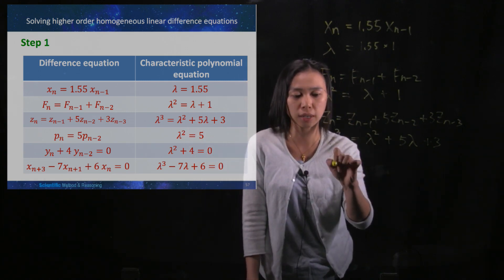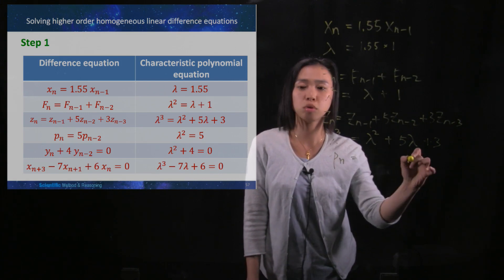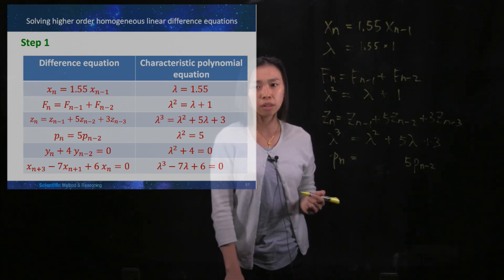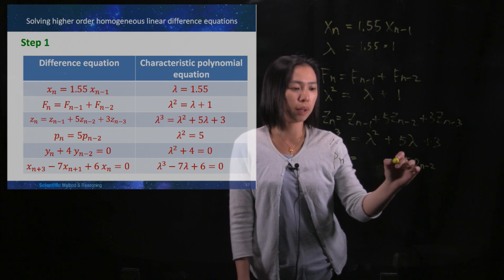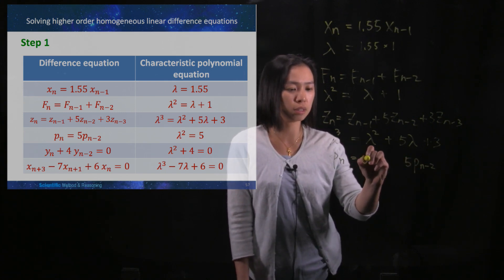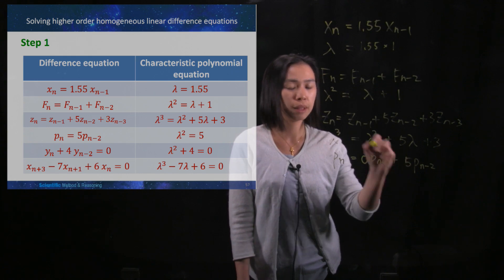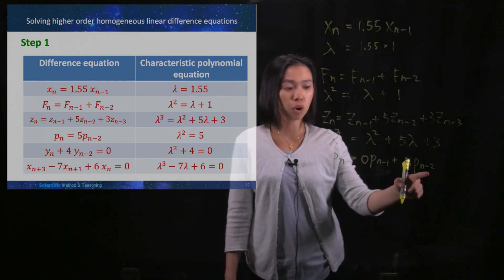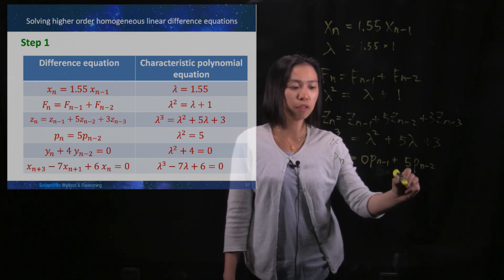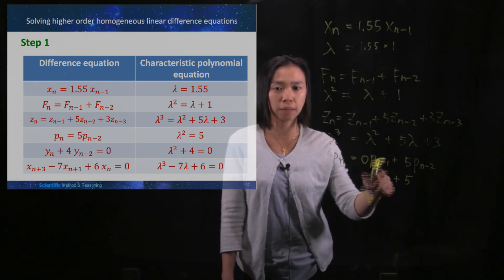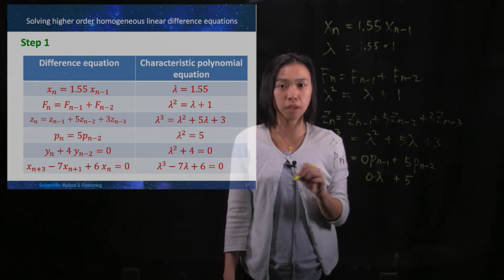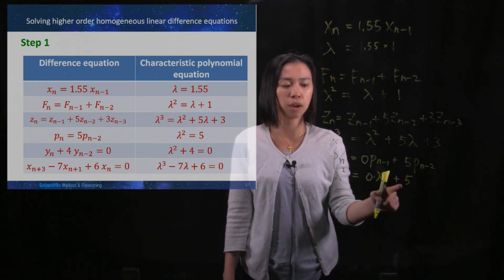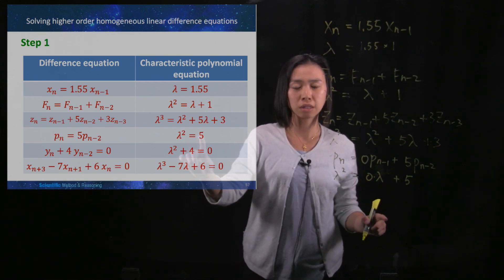The fourth example is a little tricky: pn = 5·pn-2. This is a second-order difference equation, so the pn-1 term is missing — it is 0 multiplied by pn-1. We change the smallest term to 1, keep 5, the missing pn-1 term contributes 0·lambda, and pn becomes lambda squared. So the characteristic polynomial is lambda squared = 5.